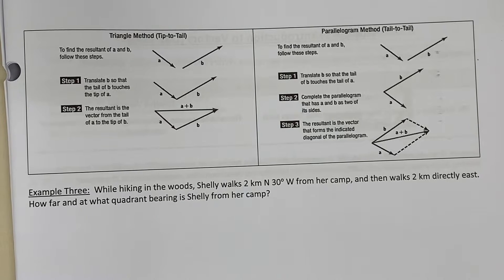Chapter 8, Lesson 1. We're going to now focus on Example 3, which is adding two vectors together using either the triangle method, tip-to-tail, or the parallel method, tail-to-tail.